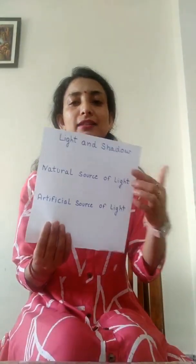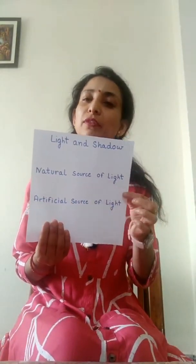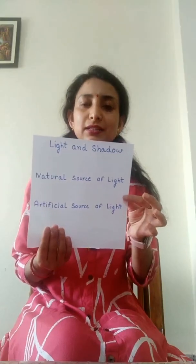So when we talk about light, light is a form of energy, and this form of energy we are getting from a source that is the sun or stars. So the sun and stars are known as the natural sources of light.